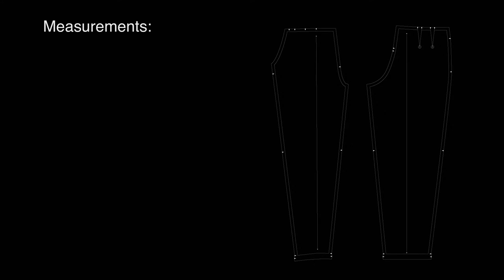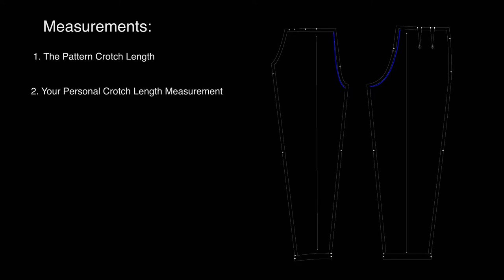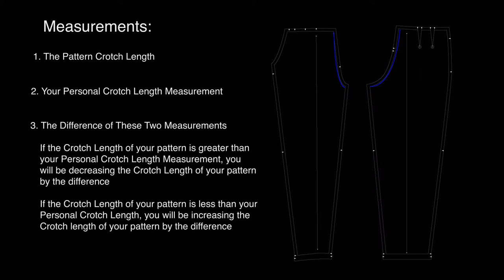You'll also need a few measurements ready in order to modify your pattern. The first is the pattern crotch length, which is taken inside of the seam allowance. If your pattern doesn't indicate what the crotch length is, I'll show you in this video how to take that measurement. The second is your personal crotch length — if you're unsure how to take this, I have a separate video on measurements. The third is the difference between these two: if the pattern crotch length is greater than your personal measurement, you'll decrease by that difference; if it's less, you'll increase by that difference.